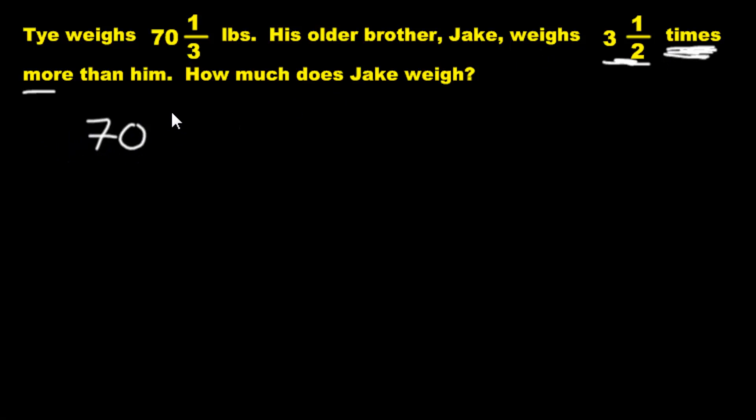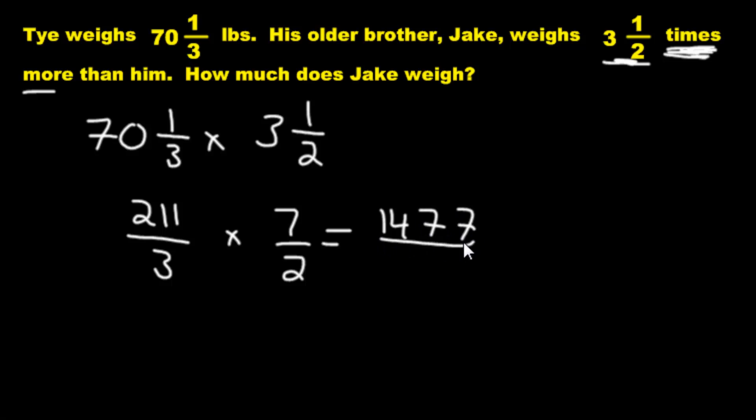So we multiply these two. We have 70⅓ multiplied by 3½. Convert them into mixed fractions. We're going to get 3 times 70 is 210, 211/3. And this is going to become 7/2. And you multiply 7/2. You multiply the numerators. We're going to get 100—let's see here. We're going to get 7 times 1, 7 times 1, 7 times 2. That's going to make 14, 7, 7. And the denominator is going to be 6. Okay? And then when you divide these, you're going to get your answer.